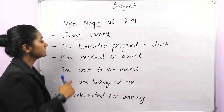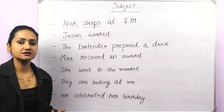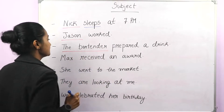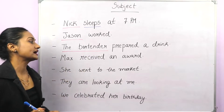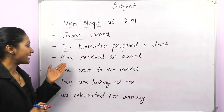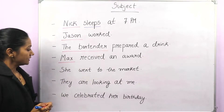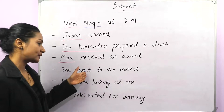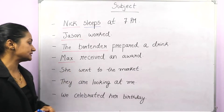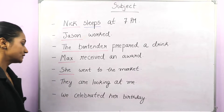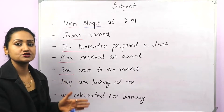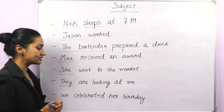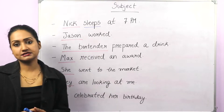'The bartender prepared a drink.' Who prepared a drink? Bartender. So the bartender is the doer, the bartender is doing an action, so the bartender is the subject. Next, 'Max received an award.' Who received an award? Max. So Max is the subject. 'She went to the market.' The main action is go — went is the second form. Who went? She. So she is the subject. 'They are looking at me.' They are doing an action, so they is the subject. 'We celebrated her birthday.' Who celebrated? We. So we is the subject.